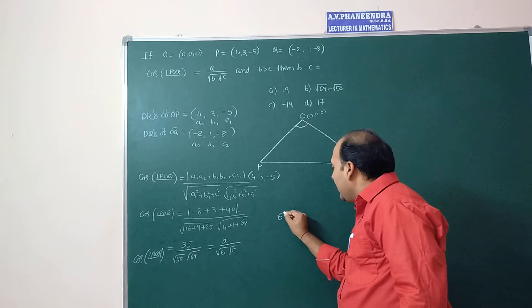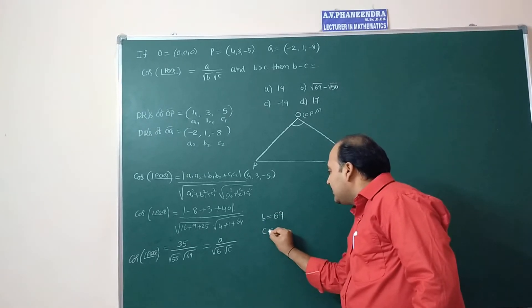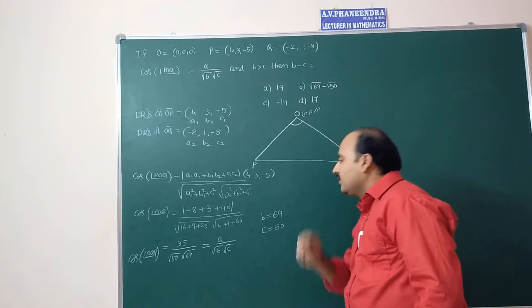So 69 we have to assume that is b and c is equal to obviously 50. A is known. They are asking only b minus c value.